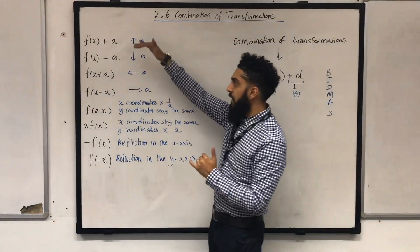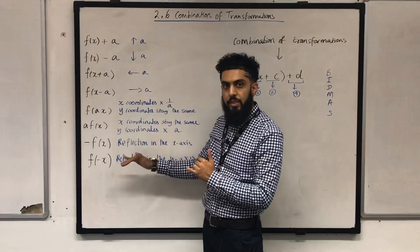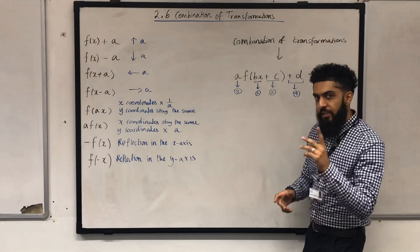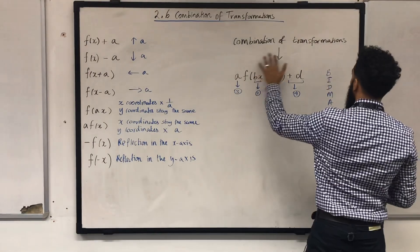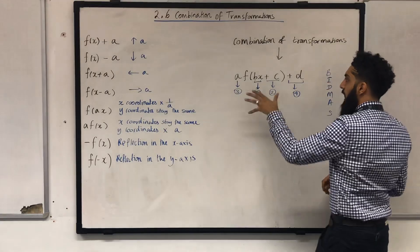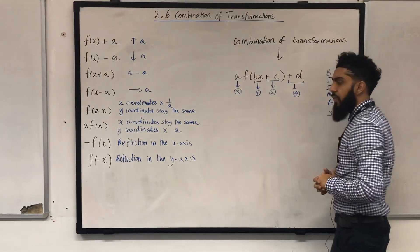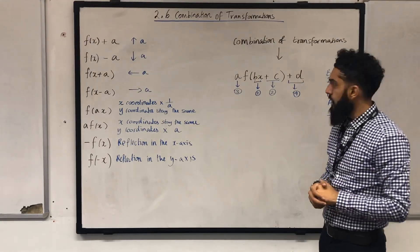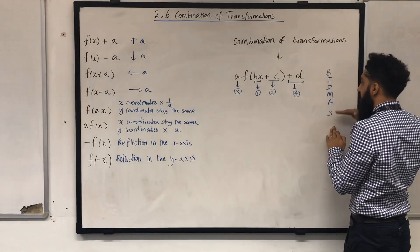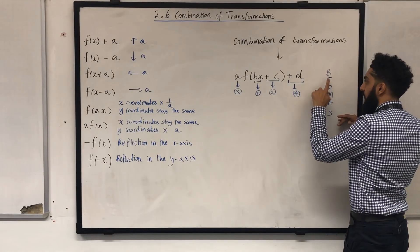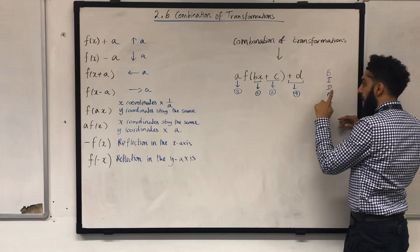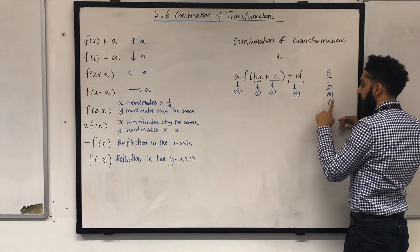So these are the individual transformations. Now, we are going to move on to combination of transformations. What we have to do is follow the BIDMAS structure: Brackets, Indices, Divide, Multiply, Add, Subtract.